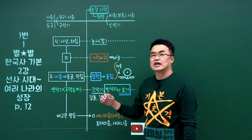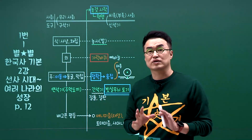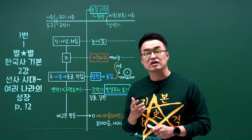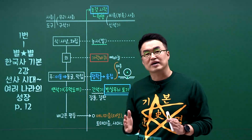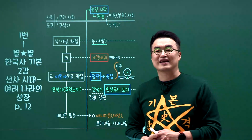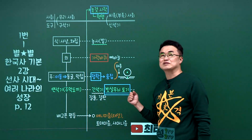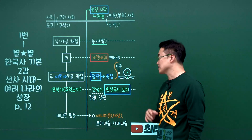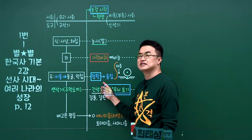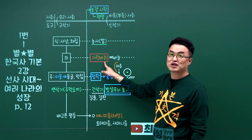여기 있는 판서는 여러분들이 가지고 있는 기본 개념 교재의 판서를 잘라서 보여드린 겁니다. 이걸 보여드리는 이유는 기본 개념에 있는 판서만 공부하셔도 시험 합격하는데 전혀 지장이 없다는 걸 보여드리려는 거예요. 여기서 대부분 나오기 때문입니다. 파란색 박스는 문제의 키워드가 될 것이고, 빨간색은 답지가 될 겁니다.